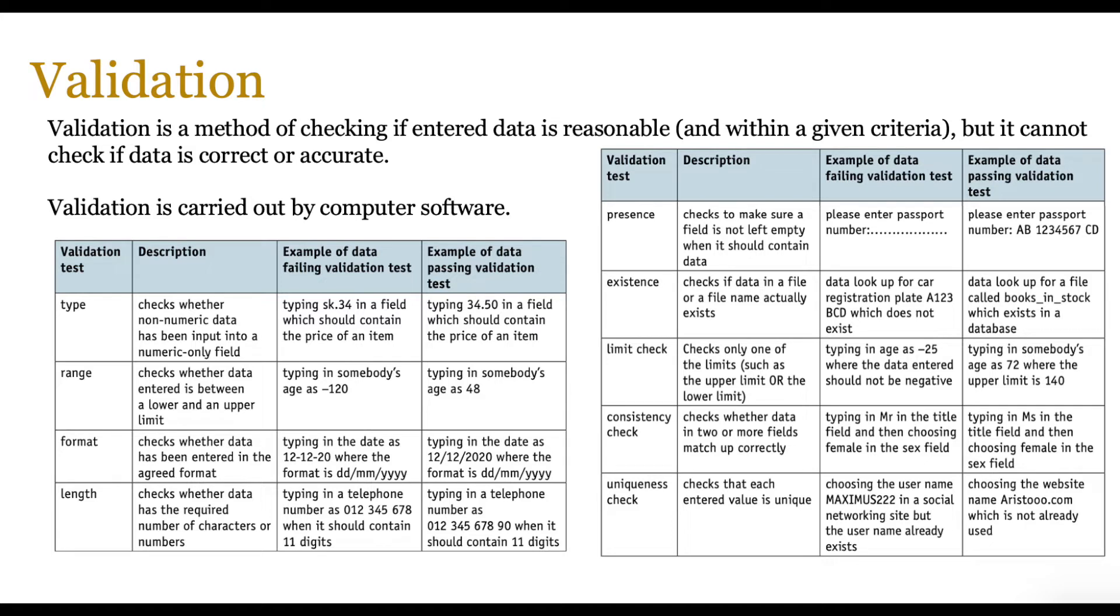You've got consistency check, which checks whether data in two or more fields match up correctly. Think about when you've got a field which says enter your title and you've entered Mrs, and then you've got a gender field where you enter male. So that means that data is inconsistent because it should be Mr and male, not Mrs and male or Miss and male. So consistency check checks whether data in two or more fields actually matches up correctly. It doesn't check that individual field for accuracy; it checks across two fields.